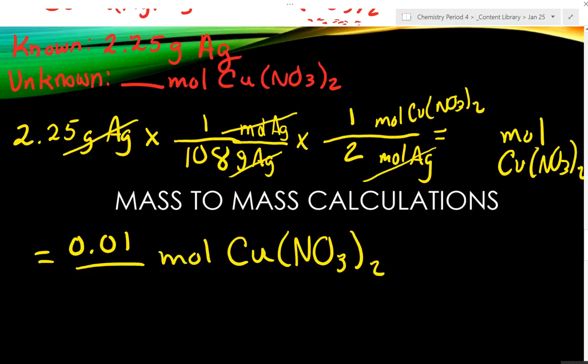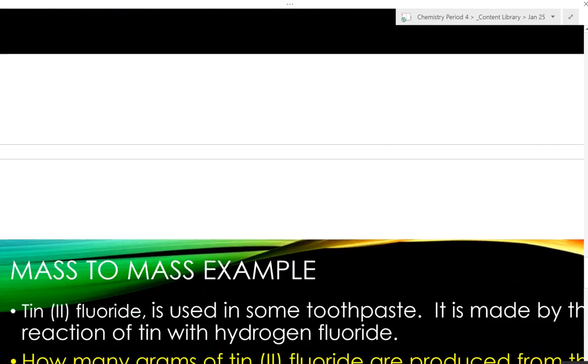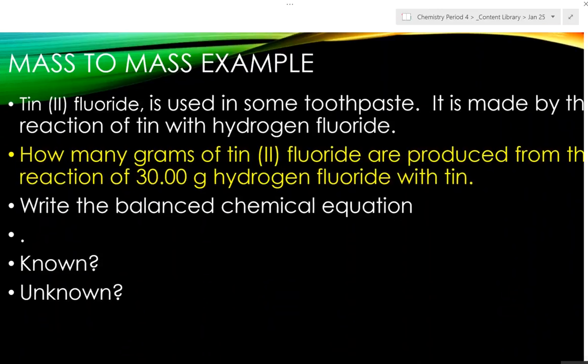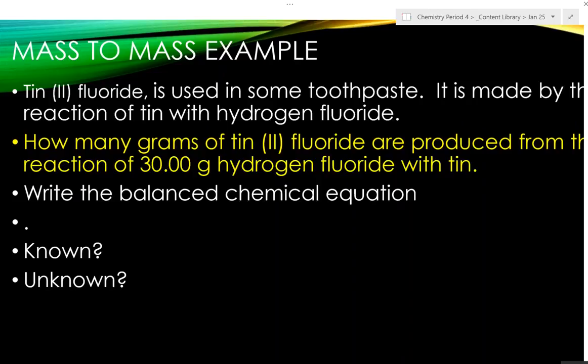Now let's go to mass to mass. We're going to do one of these calculations. Mass to mass example. Tin(II) fluoride is used in some toothpaste. It is made by the reaction of tin with hydrogen fluoride. What is the symbol for tin? Sn. What is its charge? Plus 2 because the Roman numeral. Tin can be plus 2 or plus 4.